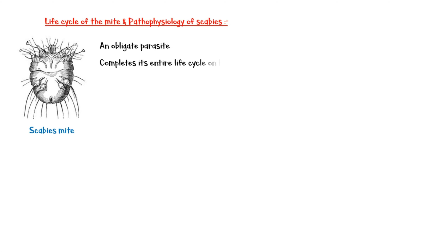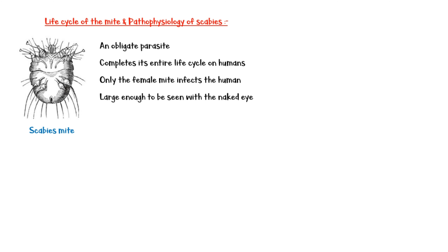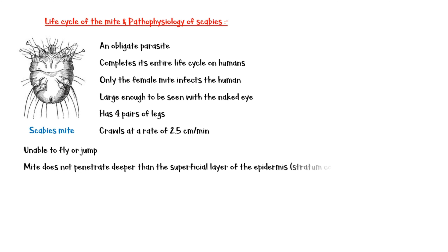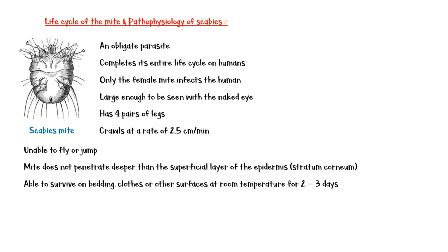Now let's discuss the life cycle of the mite and pathogenesis of the disease. Human scabies mite is an obligate parasite that completes its entire life cycle on humans, and only the female mite infects the human. It is large enough to be seen with the naked eye. The mite has four pairs of legs and crawls at a rate of 2.5 cm per minute; it is unable to fly or jump. The mite does not penetrate deeper than the superficial layer of the epidermis, the stratum corneum. It is able to survive on bedding, clothes, or other surfaces at room temperature for about two to three days.